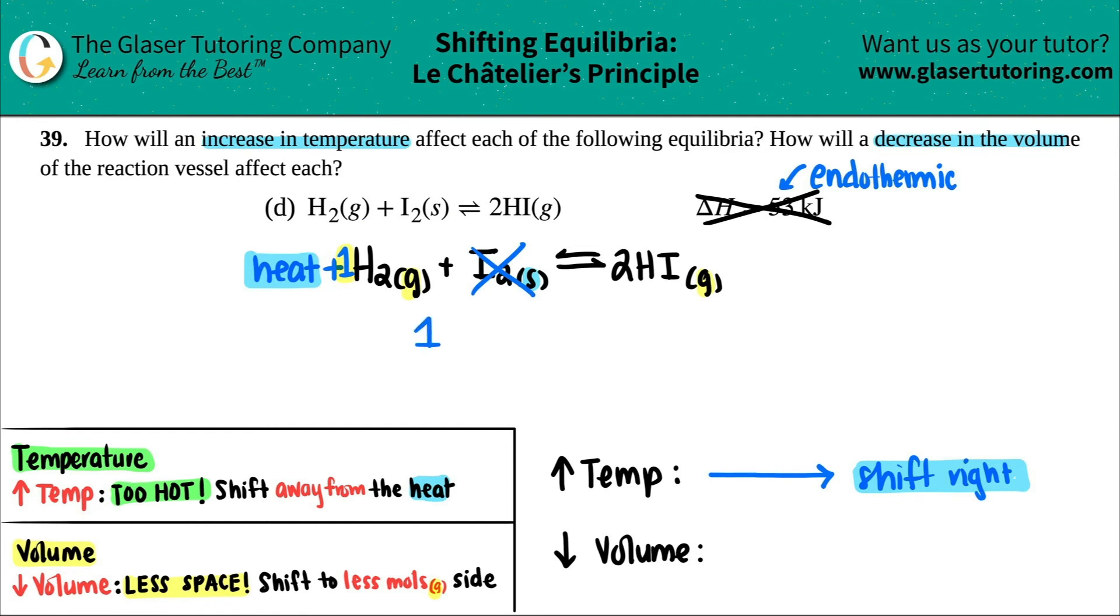Well, I see that I have nothing in front of the H2. That means I had one mole and that's the only gas over here. So I have one mole of the gas on the left hand side. And then I see that I have a two in front of the HI. So that means I have two moles on my product side. Less space means less mole side. One is less than two. So I will be favoring the left side. I'm going to be shifting that way, shifting to the left.